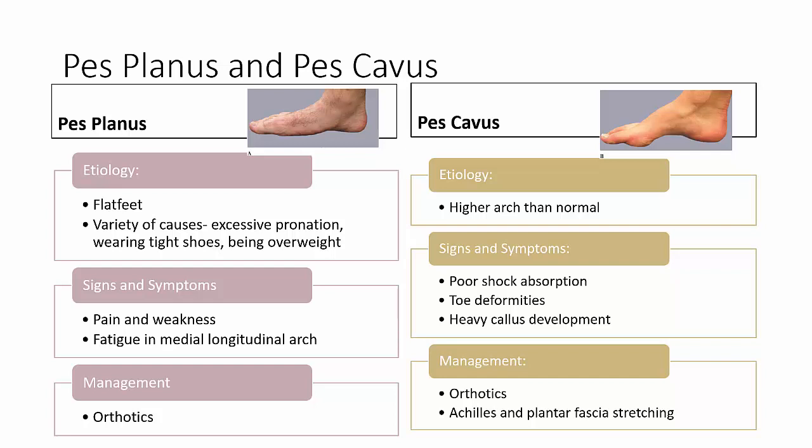Heavy calluses typically develop on the ball and heel of the foot, as these are the only structures that contact the ground during weight bearing. Management for pes cavus: if asymptomatic, no attempt should be made to correct the condition. If symptomatic, orthotics should be used — typically involving a lateral wedge. Stretching of the Achilles tendon and plantar fascia can also be extremely helpful.